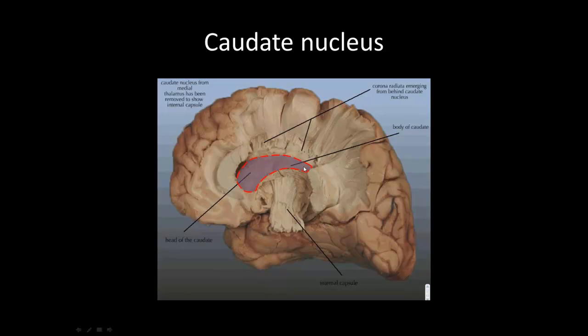The next structure is the caudate, highlighted in purple — here's the body and head. The caudate nucleus is one of the basal nuclei, involved in cognitive aspects of movement. The basal nuclei include the caudate, putamen, globus pallidus, and subthalamic nucleus — when you hear these four, just think movement, because they're involved in the motor system.